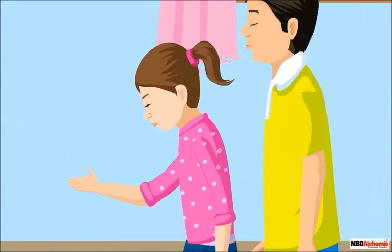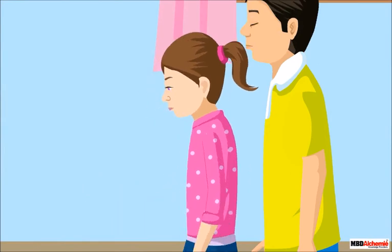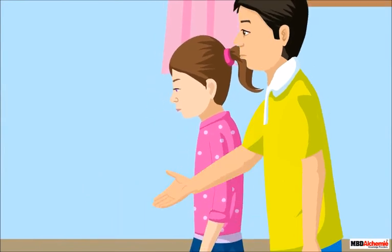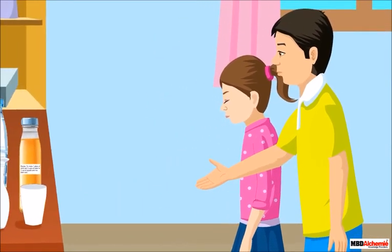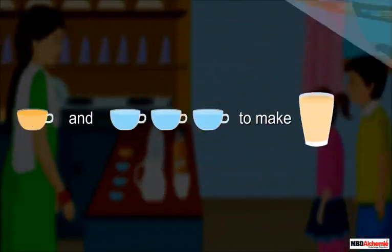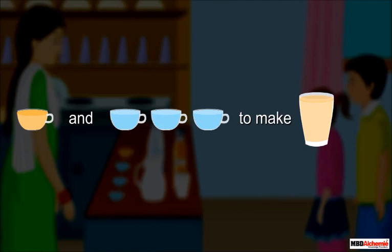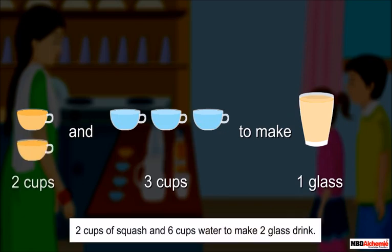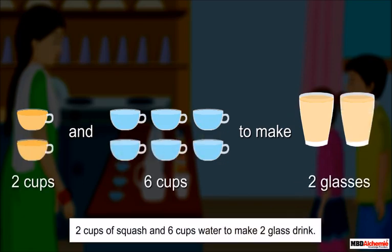Mommy, please make one drink for me too. Now how will you add the squash and water to make drinks for both of us? To make it for one person we take one cup of squash and three cups of water. For two persons we have to double the quantities — that means we need two cups of squash and six cups of water.